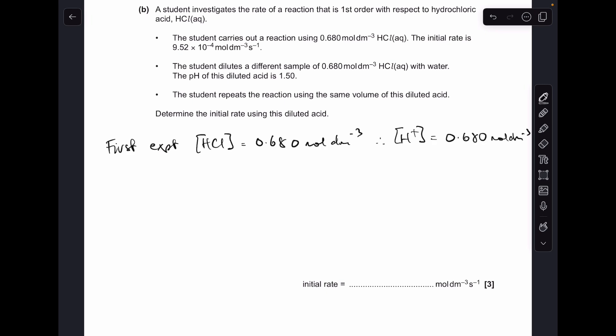So for the first experiment, where the rate was 9.52 times 10 to the minus 4 moles per decimeter cube per second, the concentration of the acid was 0.68 moles per decimeter cube, and because it's monobasic, the H-plus concentration will also be 0.68 moles per decimeter cube.